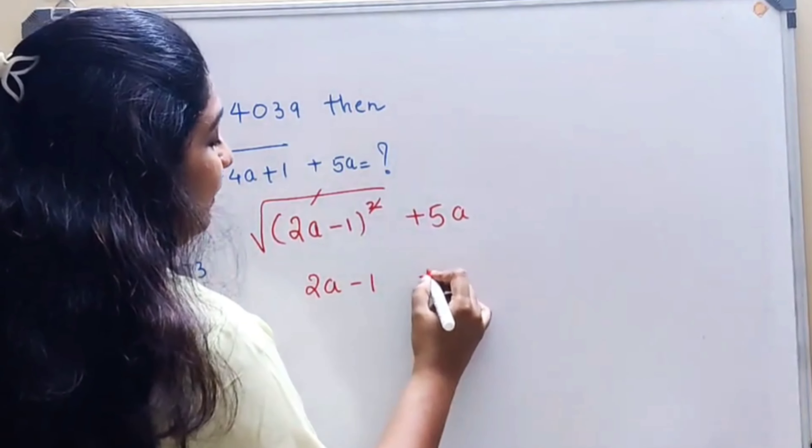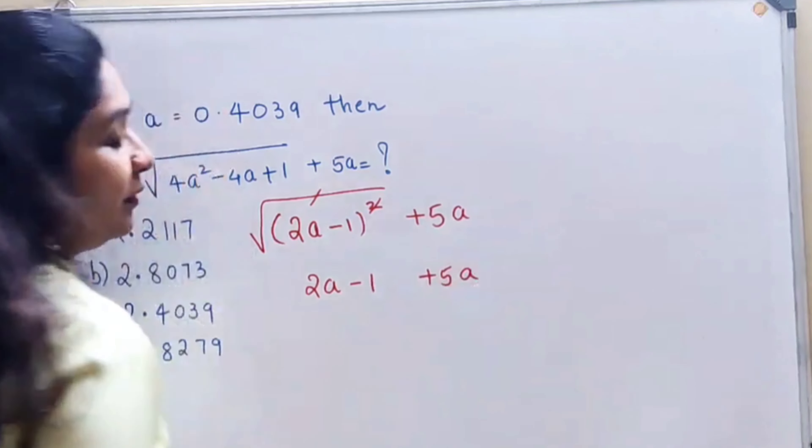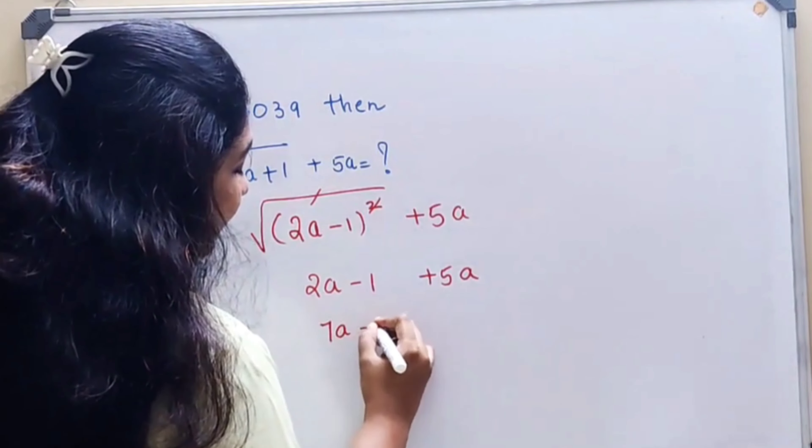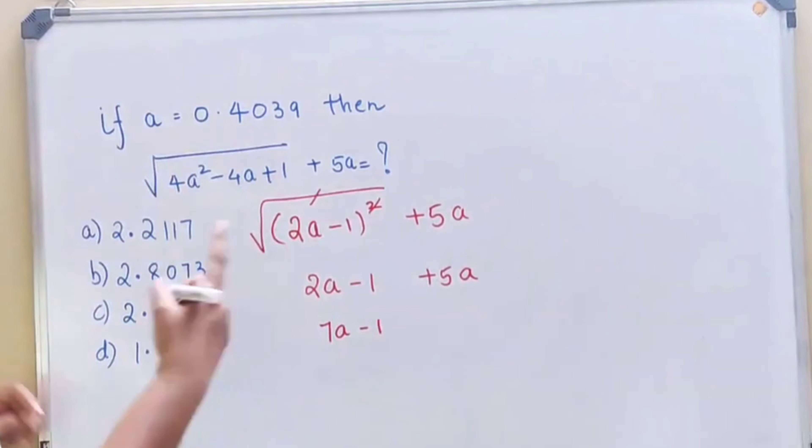So this cancels, we have 2a - 1 + 5a. So this now changes to 7a - 1.